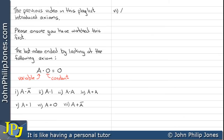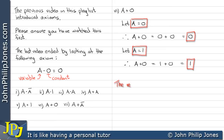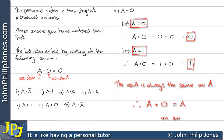Let's look at the next example which is A OR zero. Let A equal zero. Therefore A OR zero becomes zero OR zero, which gives a zero. Now let A equal one. Therefore A OR zero becomes one OR zero, which gives a result of one. When A was zero the result was zero, and when A was one the result was one. The result is always the same as A. Therefore A OR zero always gives A, and this is another example of an axiom.